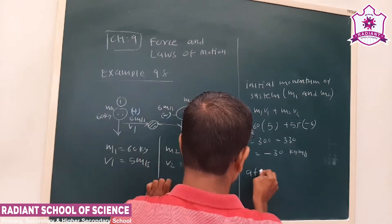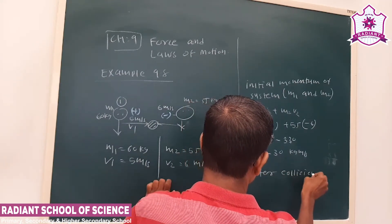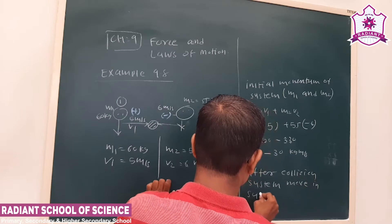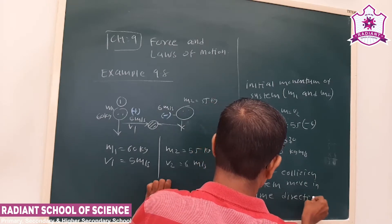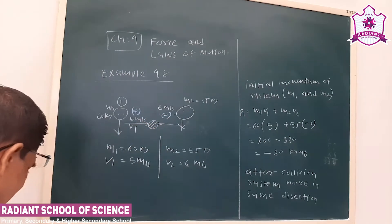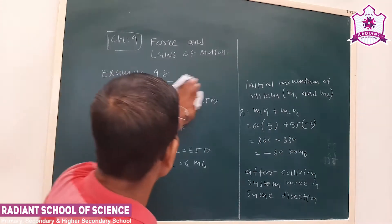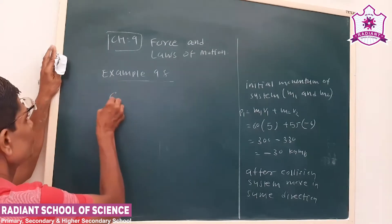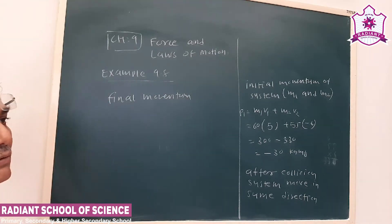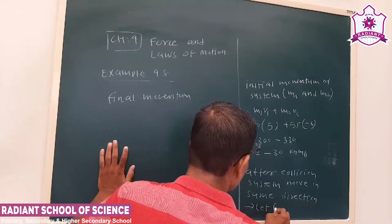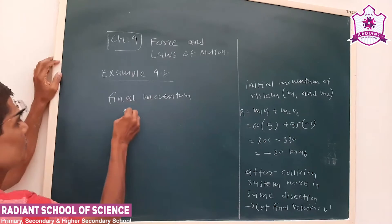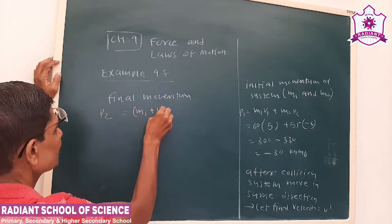After collision, the system moves in the same direction. V1 and V2 were in opposite directions, that is why V2 was taken as negative. The final momentum of the system is made up of two parts. We have to find out the final velocity of the ball. Let us say the final velocity is V-dash, so the final momentum is M1 plus M2 into V-dash, where M1 is 60 and M2 is 55.